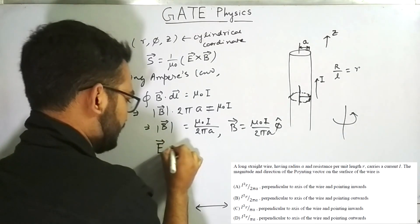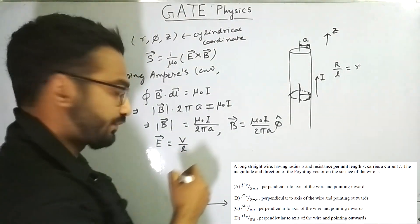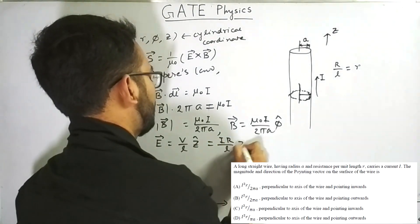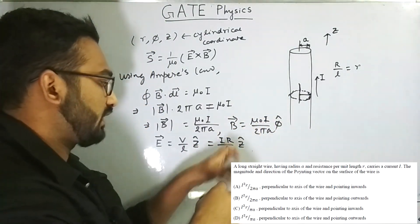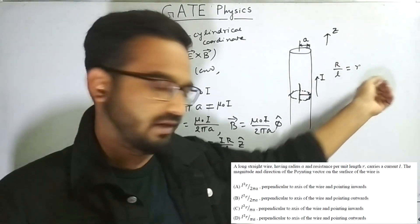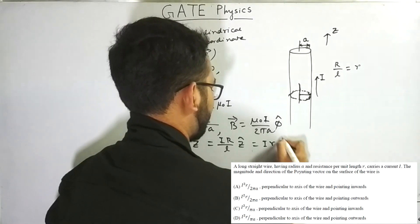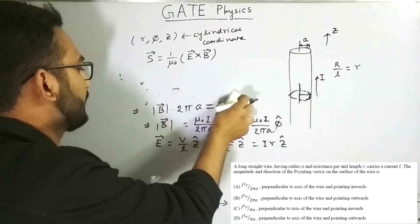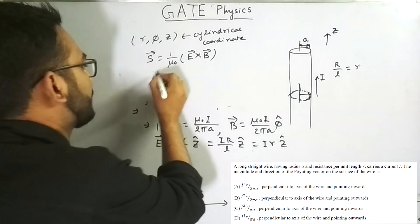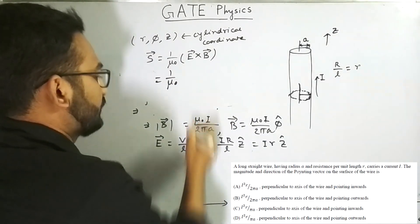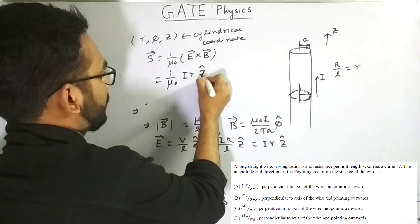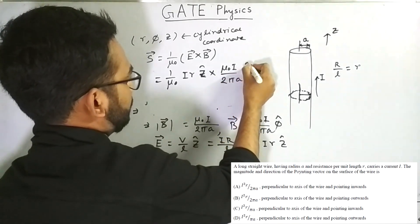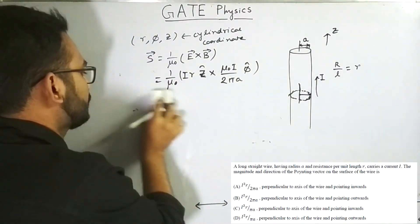Now for the electric field: E equals V/L times ẑ. The electric field is directed in the ẑ direction. Now V equals i times R/L, and resistance per unit length is given as small r, so E equals ir ẑ. Now we calculate the Poynting vector S equals (1/μ₀) times E cross B, where E equals ir ẑ and B equals (μ₀i / 2πa) φ̂.